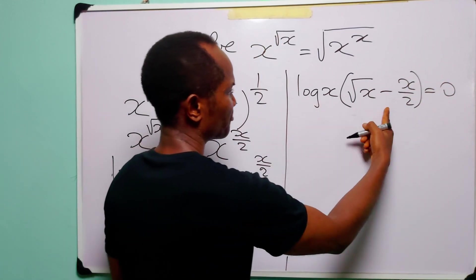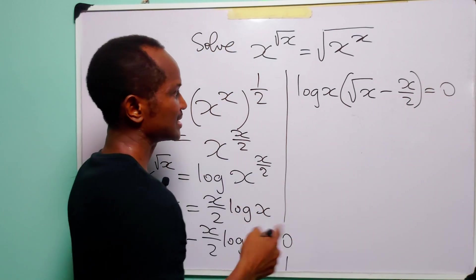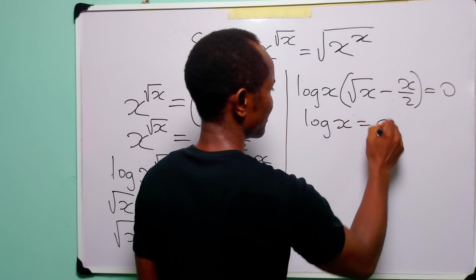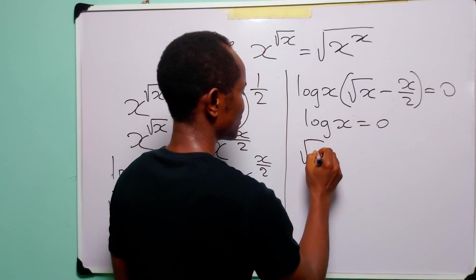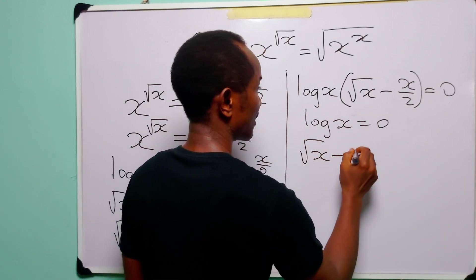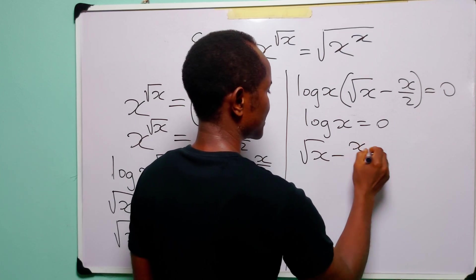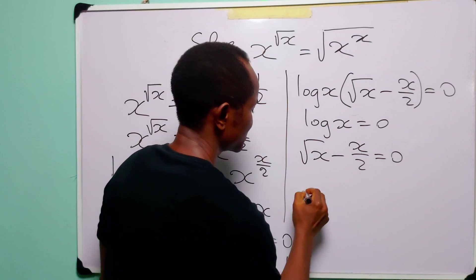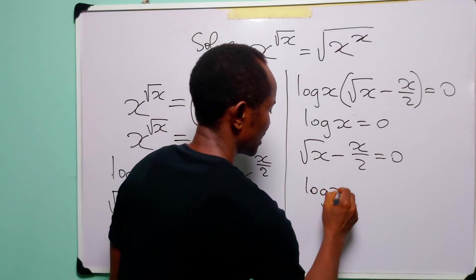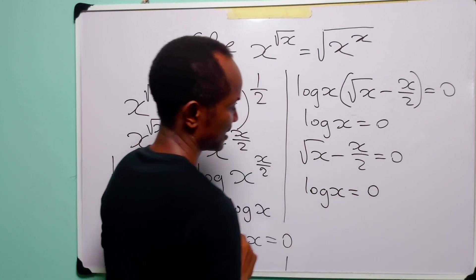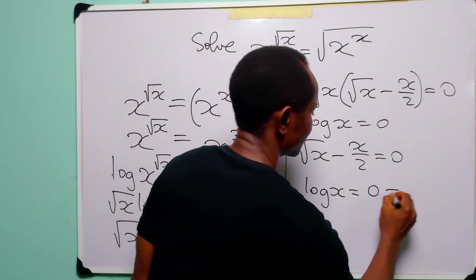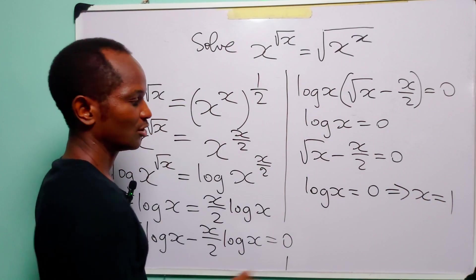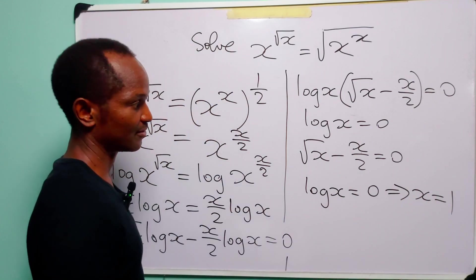When we have a product like this equal to 0, it simply means that either log x is equal to 0 or square root of x minus x over 2 is equal to 0. In the first case, log x is equal to 0, which gives us x equal to 1.